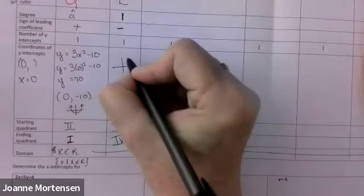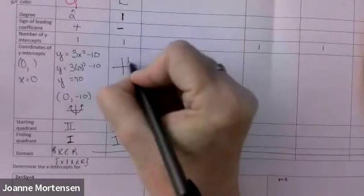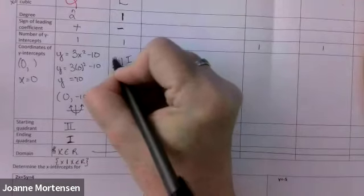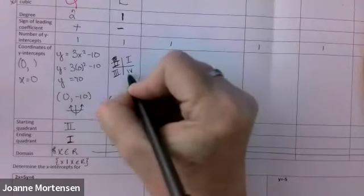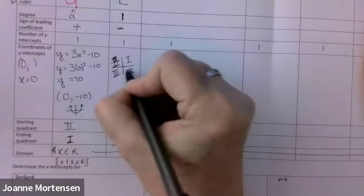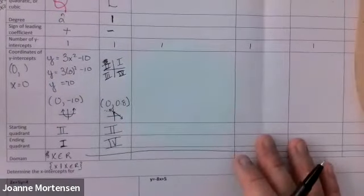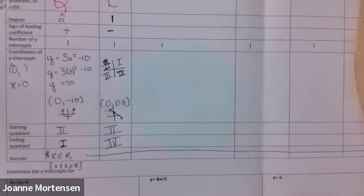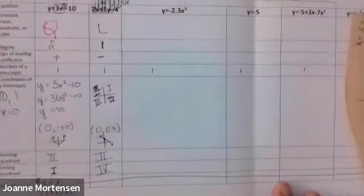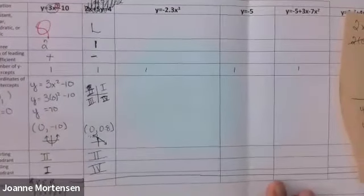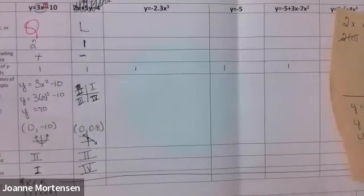So my quadrants are two and four — and then we're done because we know what the domain is: all reals.